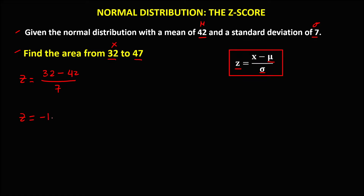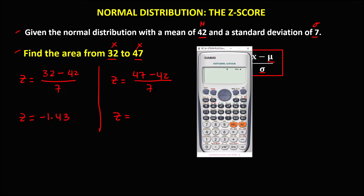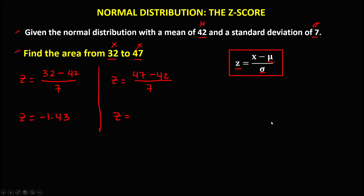So that's negative 1.43. Then for x = 47, Z equals 47 minus 42, divided by 7. That gives us 0.71. Now we use these Z-scores to find the area.